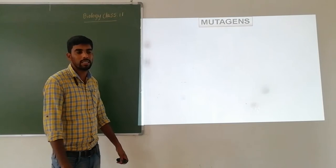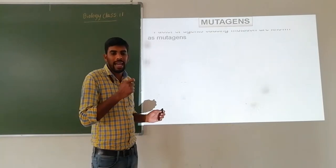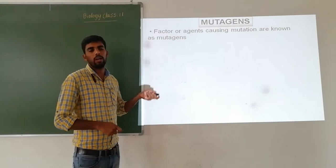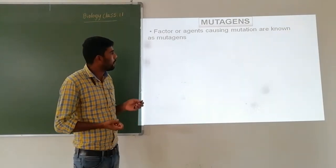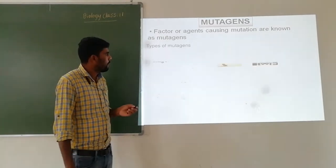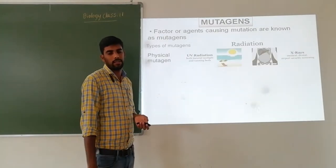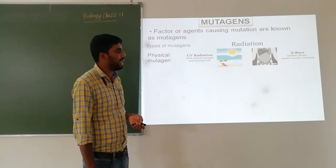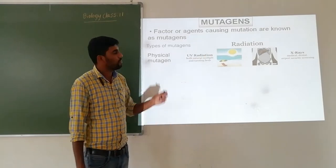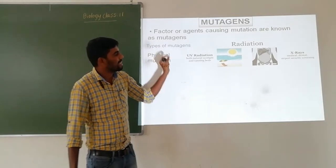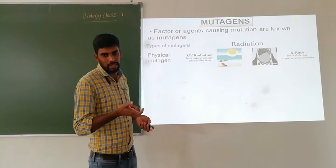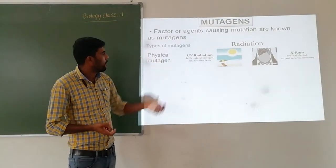Coming to mutagens — mutagens are agents or factors which cause mutation. Mutations can be caused by several mutagens classified into types. First, physical mutagens like radiations: UV radiation and ionizing radiations such as X-rays and gamma rays. These alter the genotype by changing the DNA sequence. Such changes are called mutations caused by physical mutagens.